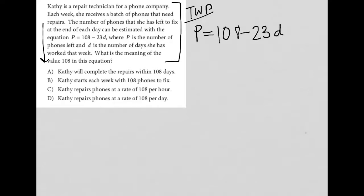And we're told that, in this case, the P represents the number of phones she has left to fix. So I'm just going to underline phones she has left to fix and kind of give an arrow to the P here, where P is the number of phones left and D is the number of days. So D, number of days, I'll just put an arrow here and say days.